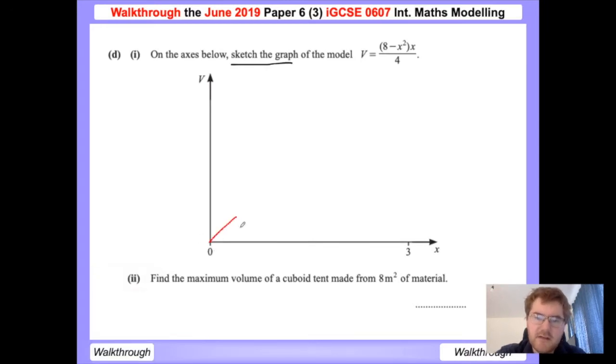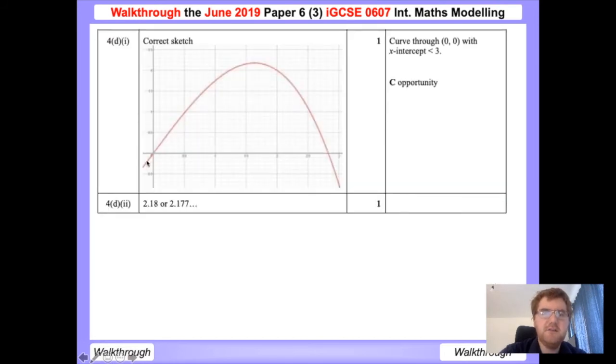So when I draw my sketch, I need to make sure that when I cross the x axis, I cross before the three because I know this is 2.83 approximately. So whenever you do a sketch, generally speaking, label the x intercepts and the y intercepts just to make sure you get all the marks. And we'll look at the mark scheme. Here's the correct sketch. You only get one mark for this, but it's good practice.